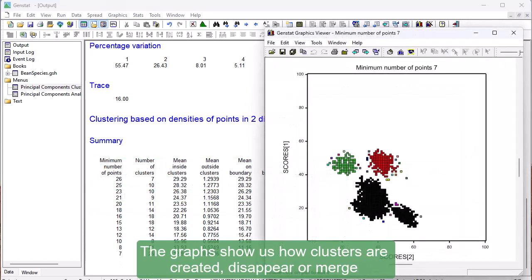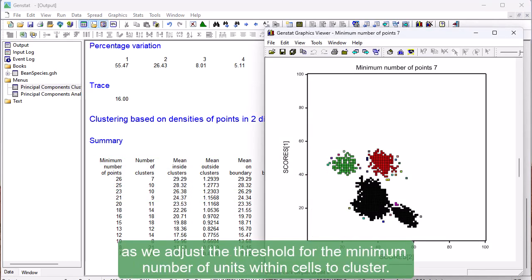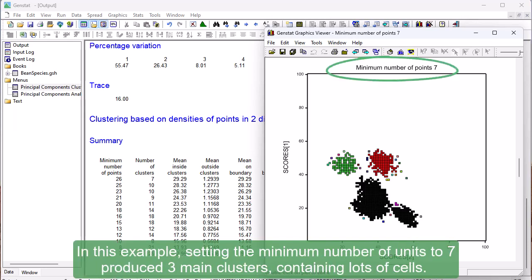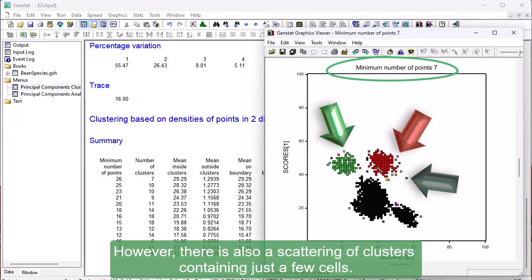The graphs show us how clusters are created, disappear, or merge as we adjust the threshold for the minimum number of units within cells to cluster. In this example, setting the minimum number of units to 7 produced three main clusters containing lots of cells. However, there is also a scattering of clusters containing just a few cells.